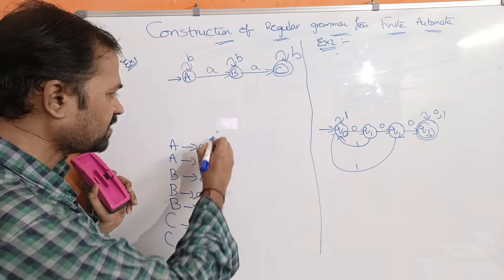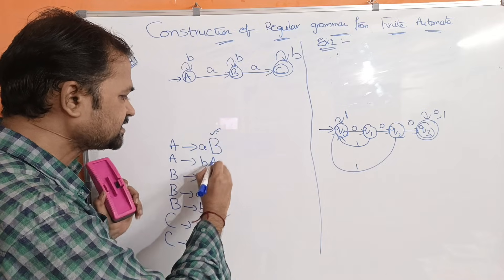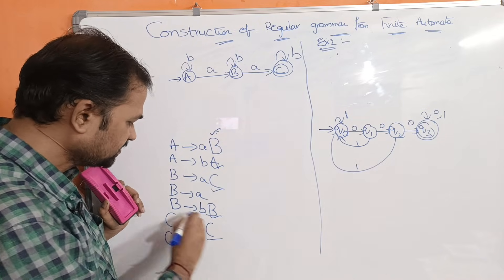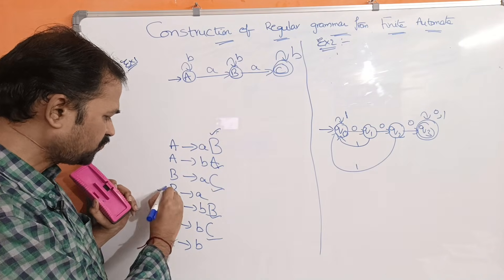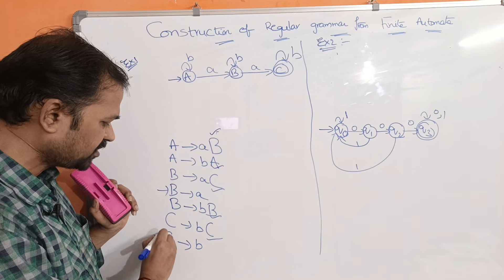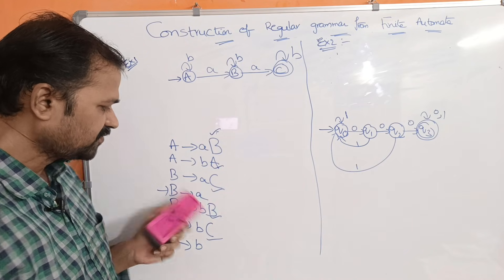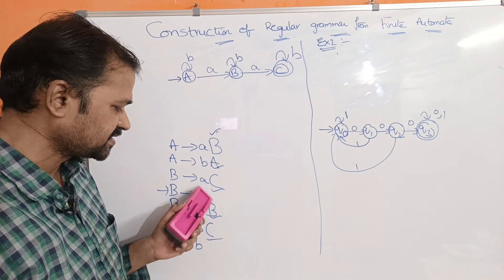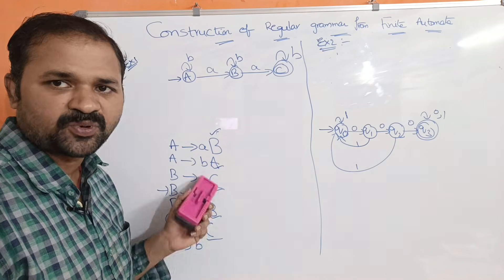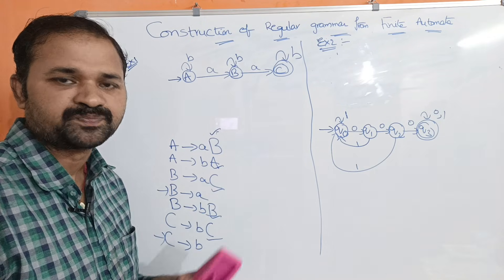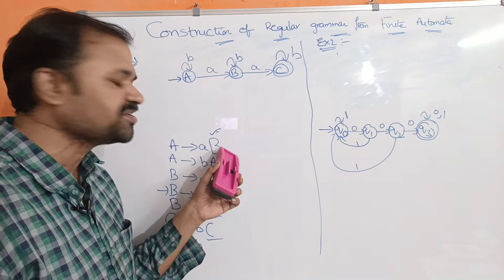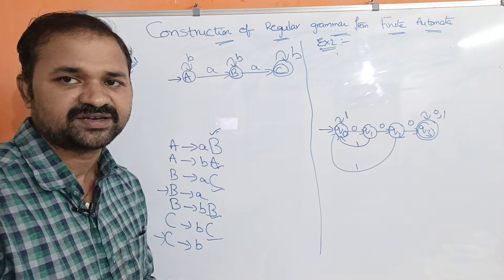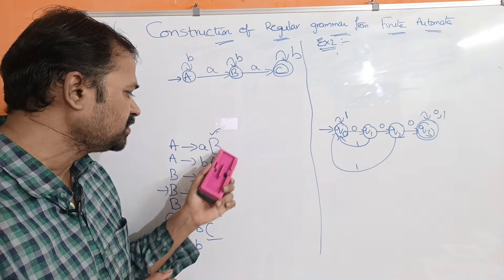This is the regular grammar for this finite automaton — it is a right-linear grammar. Note that some productions contain only terminal symbols. If there is a non-terminal symbol on the right-hand side, it must be the rightmost symbol.